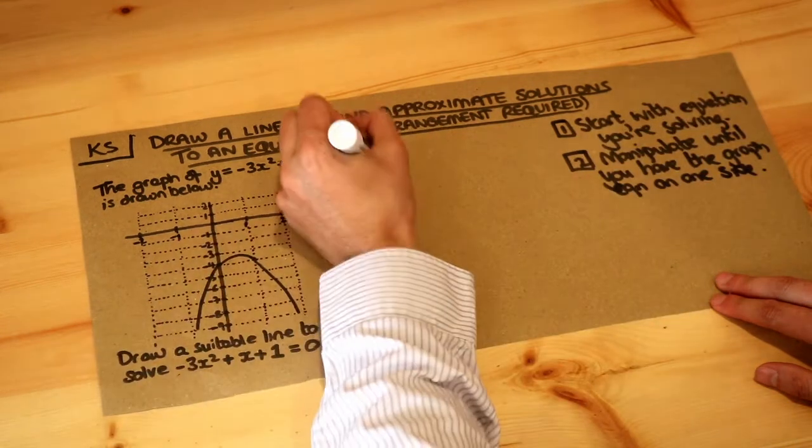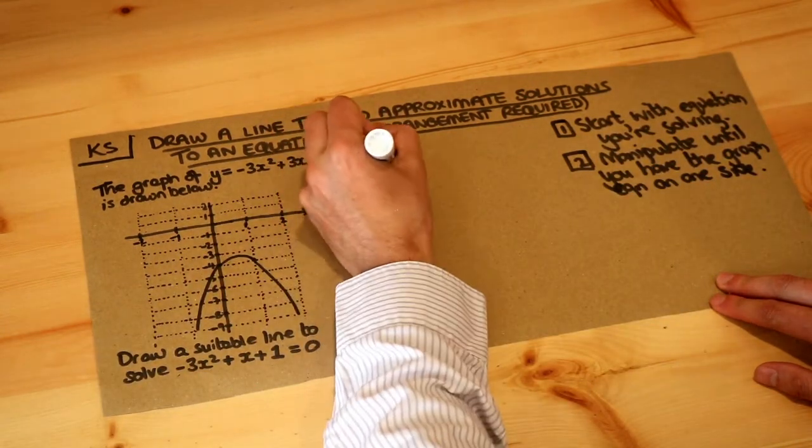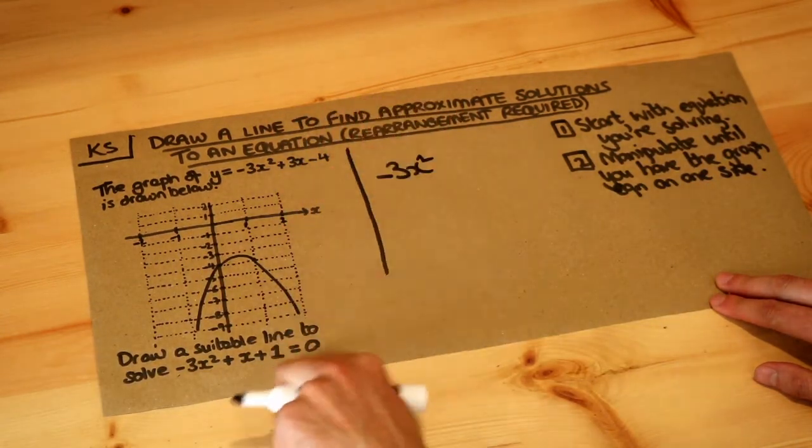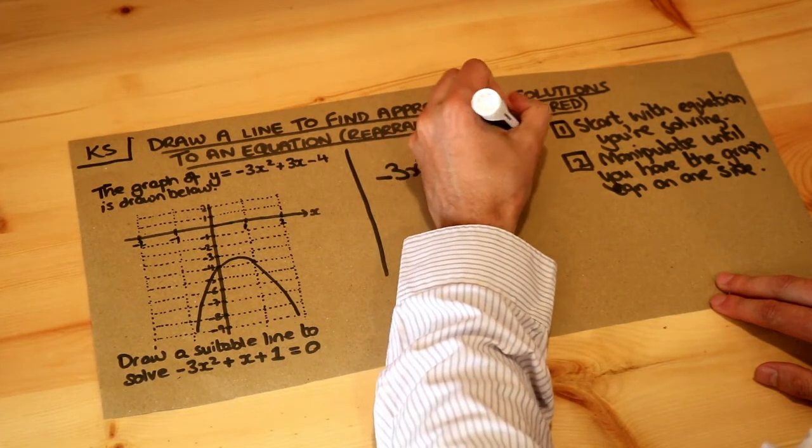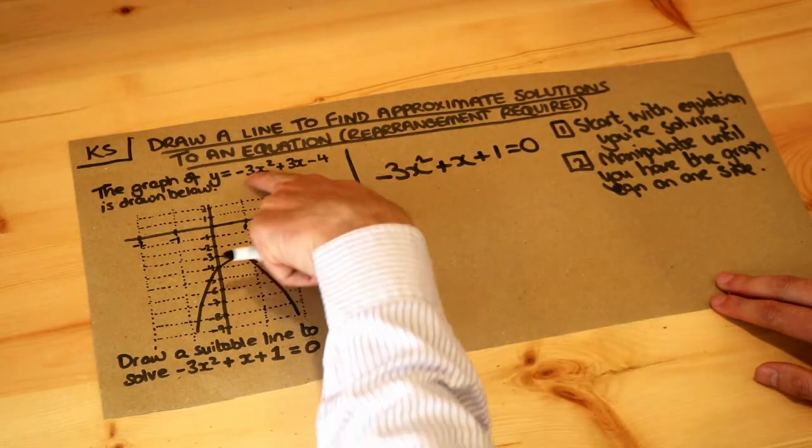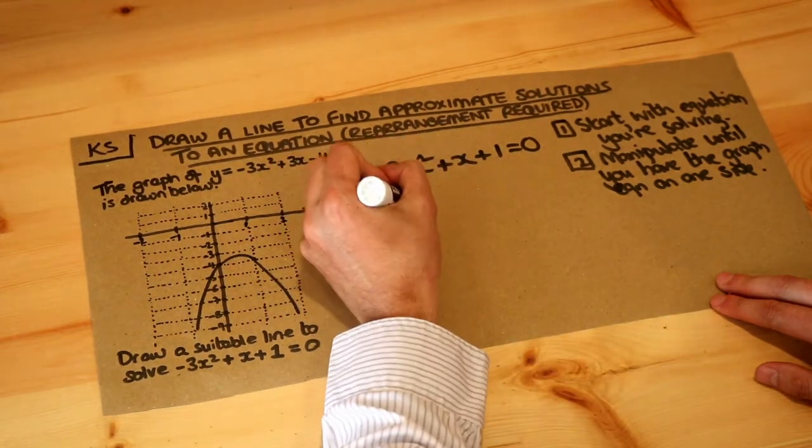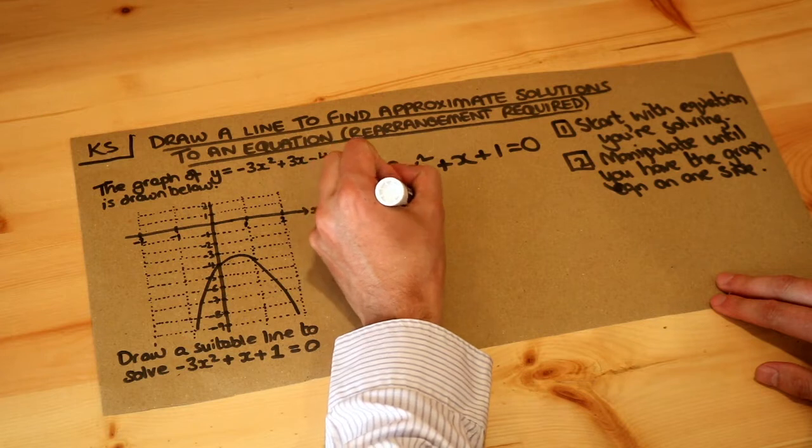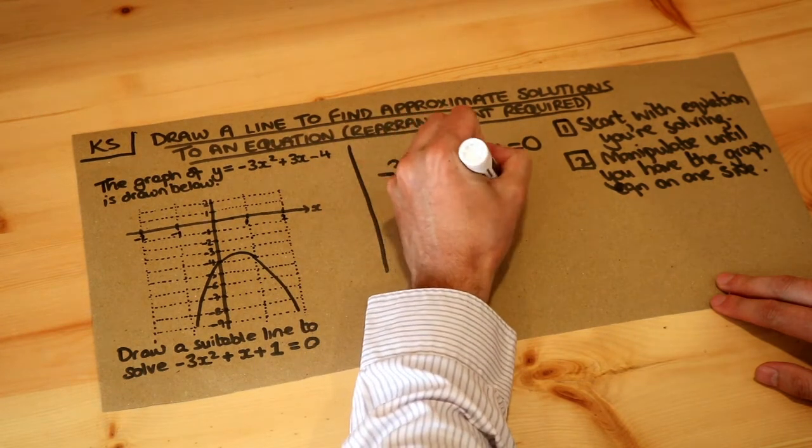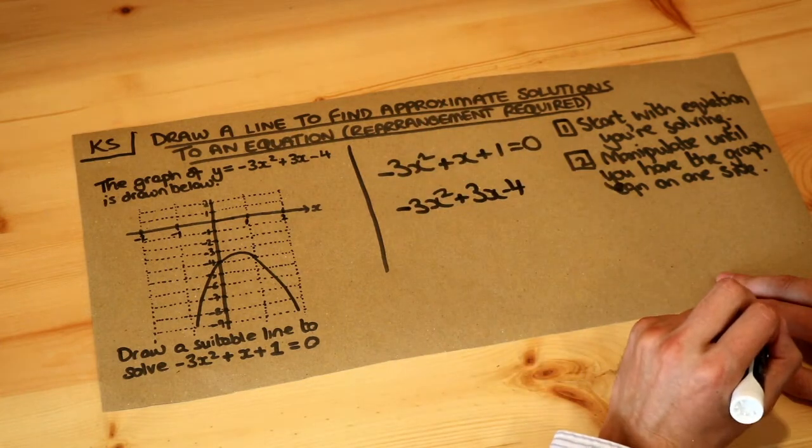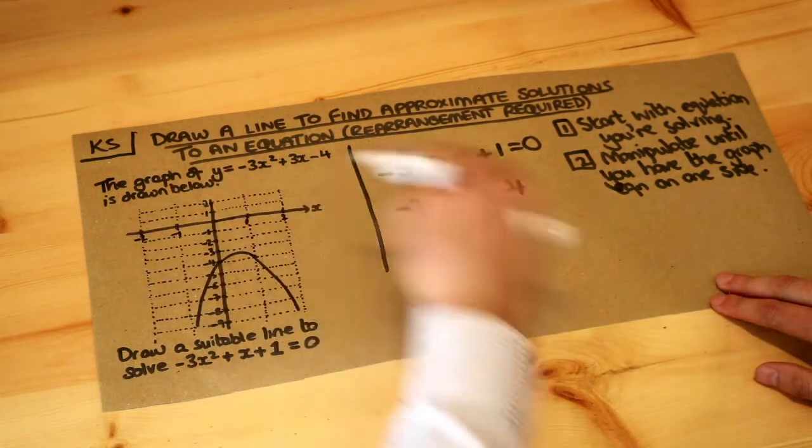We're going to start with minus 3x squared plus x plus 1 equals 0. That's the equation we're trying to solve, but we want to see the graph equation on one side. So we want to see minus 3x squared plus 3x minus 4 on one side of the equation because then we can use this graph.